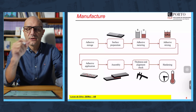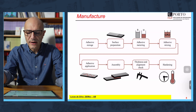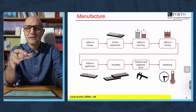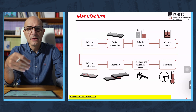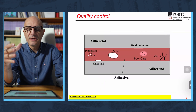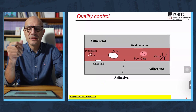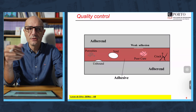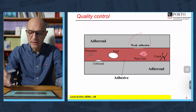We will discuss all the manufacturing steps and, as you can see in this figure, there are many. This is a very important part of the technology because many things can go wrong here if we don't do things properly. After the joint is made, we have the quality control — basically we want to detect defects without destroying the joint. Fortunately, there are many methods, but there is one particular defect that is still extremely difficult to detect, which is weak adhesion.